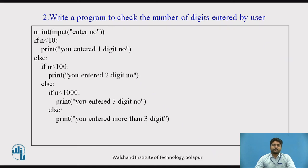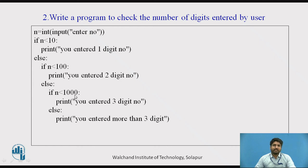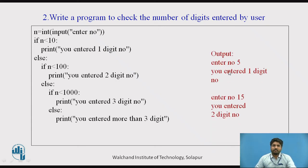Write a program to check the number of digits entered by the user — another nested if example. Notice the indentation. If n is less than 10, print 'you entered 1 digit'; else if the user enters a number from 10 to 99, print 'you entered 2 digits'; else if n is less than 1000, print 'you entered 3 digit number'; else for any number more than 3 digits, also show 'you entered 3 digit number'. If the user enters 5, it shows 'you entered 1 digit'; if the user enters 15, it shows 'you entered 2 digit number'.